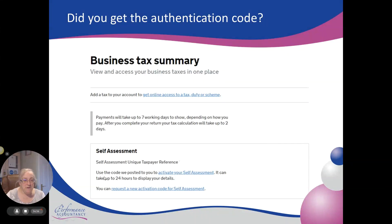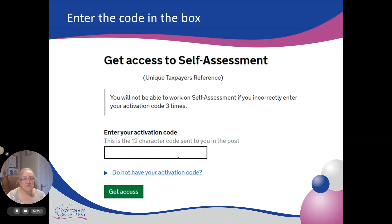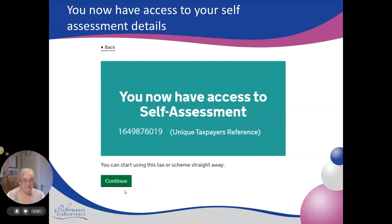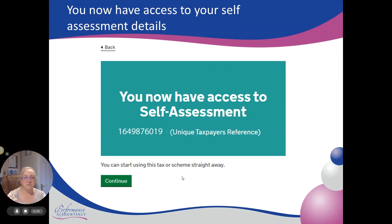That activation code is a secure method to make sure it really was you that asked for access to self-assessment. Seven days later it comes in the post, you come back to the system, log on to your personal tax account, go to self-assessment, and it will start to give you what they call the business tax summary. Down here it says 'Use the code we posted to activate your self-assessment'. Click through on that, and with that piece of paper you'll have the activation code. Type in the 12-character code and then request access — and that's it. You now have access to your self-assessment.